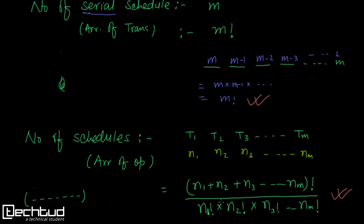Out of all possible schedules, some will not end up with correct data. Serial schedules always end up with consistent data, but among the non-serial schedules many can lead to inconsistency because they work with shared variables and may corrupt data. We need to understand how to recognize correct schedules versus inconsistent ones, and in the next lecture we will study the various types of schedules.